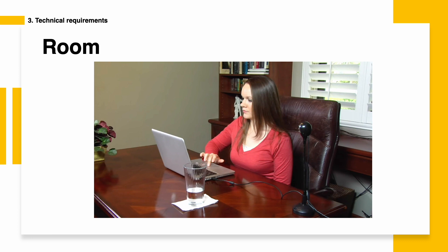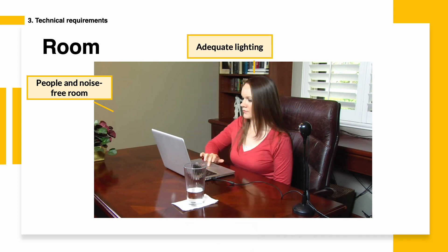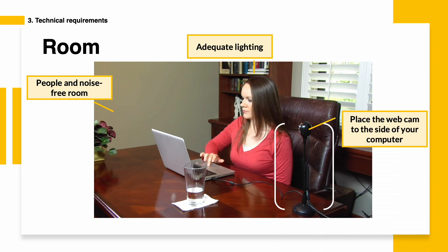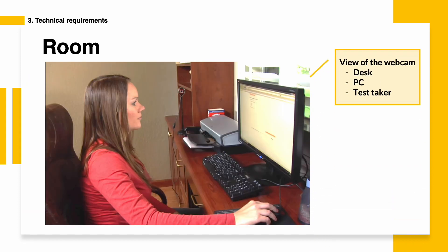Room: another important aspect of your test is the room. It's imperative that the room you use while taking the evaluation is free of people and distractions, like outside noise. Also, the room must have adequate lighting so the evaluator can clearly see what's going on. Then you have to position the webcam to the side of your computer at a proper distance so the evaluator can see you, your desk, and your computer. Remember that your desk must be clear of any prohibited items. Here you can take a look at what the evaluator should view through your camera. Once the test starts, you're not allowed to leave or move out of sight of the evaluators — doing so will violate testing rules and your evaluation will be canceled.